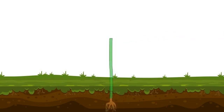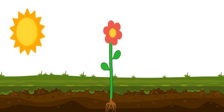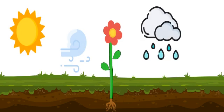Roots, stem, leaves, flower needs sun and air and a little rain shower.